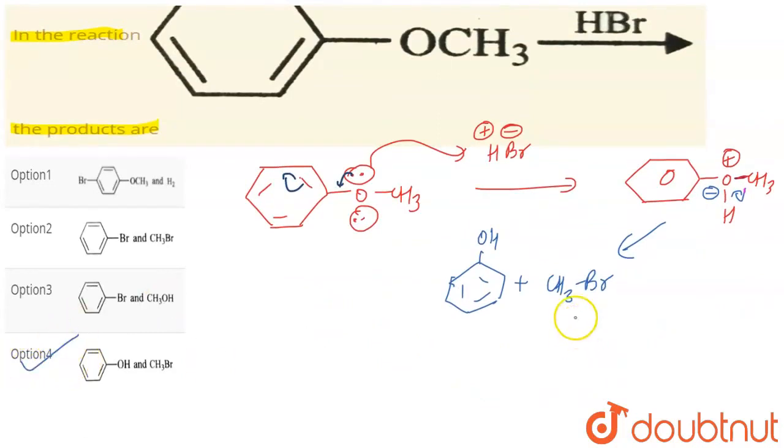So the final product is option 4, which is phenol and methyl bromide. Option 4 is the correct answer. Thank you.